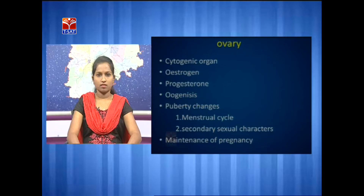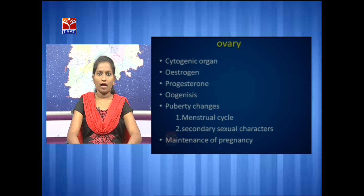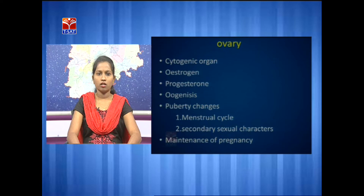The ovary is a cytogenic organ that secretes hormones like estrogen and progesterone. These hormones are helpful in the development of ovarian follicles and produce ovum in the form of oogenesis. Estrogen stimulates puberty changes like the menstrual cycle, development of secondary sexual characters, and increase in mammary glands. Progesterone maintains pregnancy, is helpful in the enlargement of the birth canal during labor or parturition, and is also helpful in the formation of the placenta.